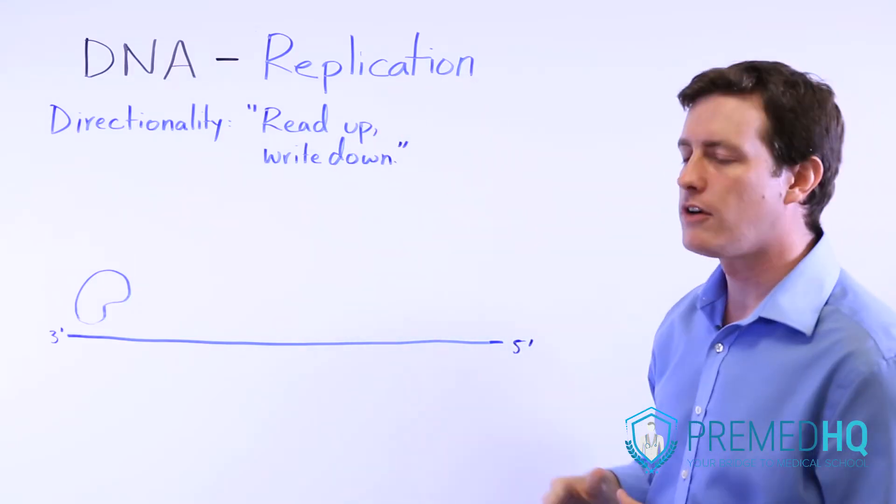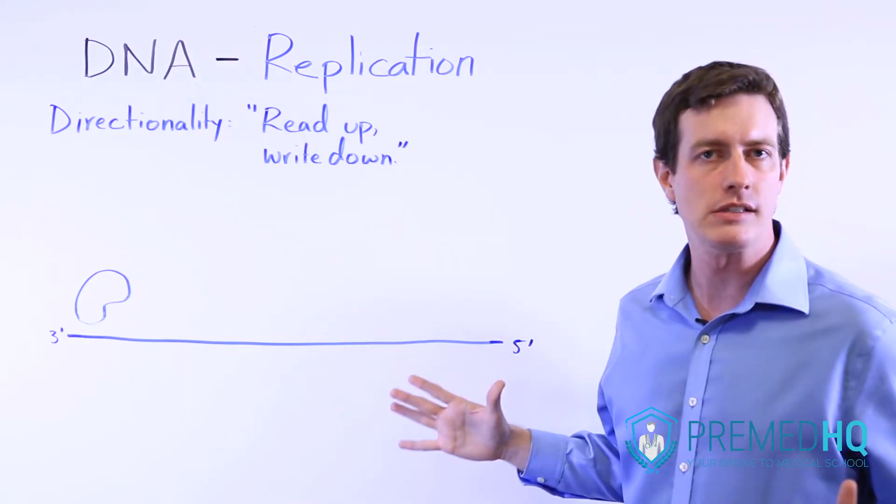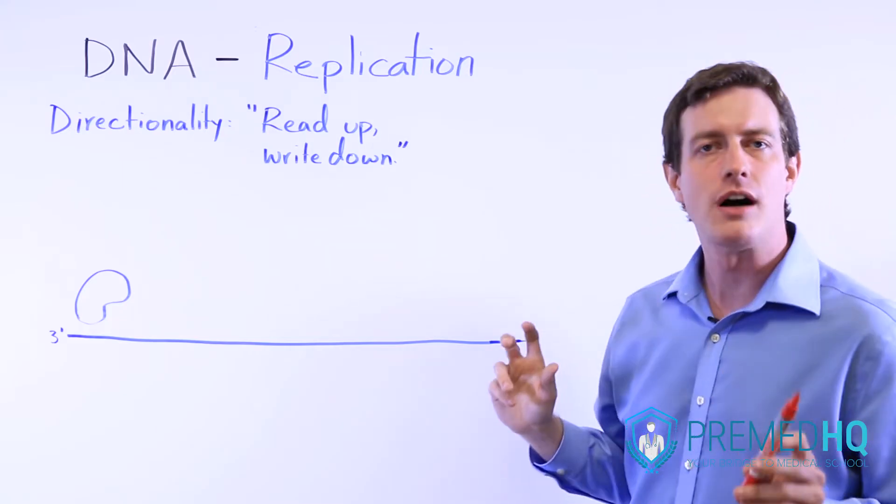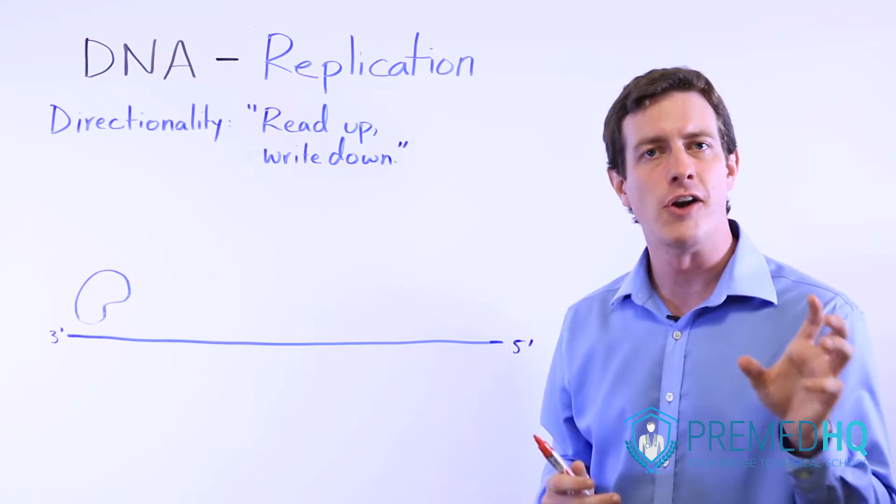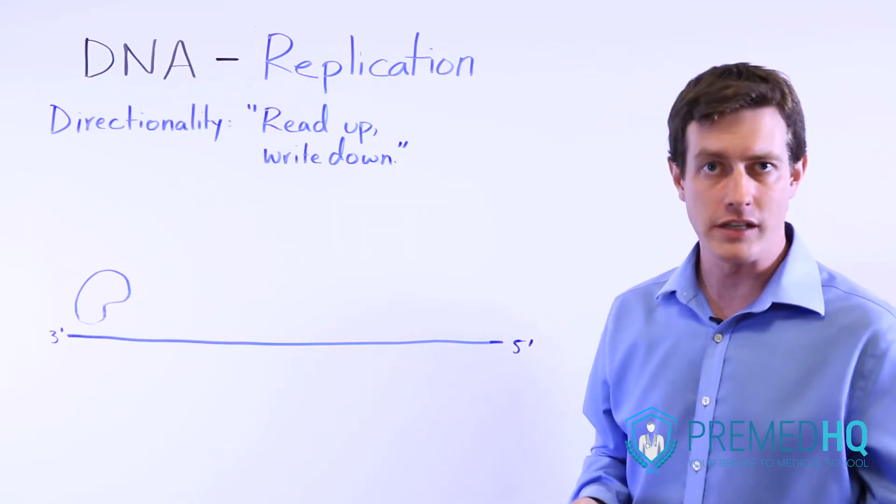The replication involves making copies of the DNA, and this happens during the S phase of mitosis, for example. Whereas the central dogma of DNA to RNA to protein is what's involved with transcription and translation.